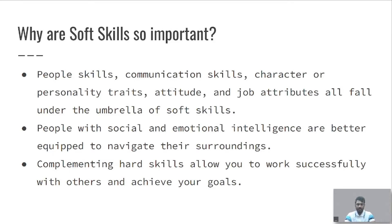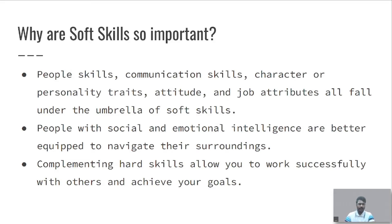People skills include how you deal with people. Communication skills cover how you communicate and how you exchange ideas via voice. Character refers to how you behave, your personality, and your attitude — how you react and respond. Job attributes may include your dress etiquette or your table etiquette. So these are known as soft skills.